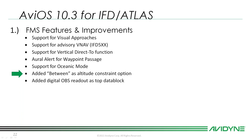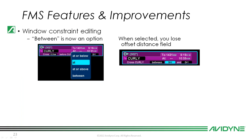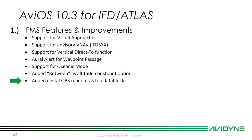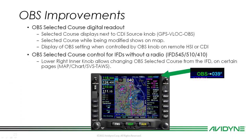We added 'between' as an altitude constraint. In your flight plan when you change altitude constraints — normally at or below, at, or at or above — we've added 'between,' which is a block altitude where you set two altitudes. We also added a digital OBS readout for the top data block: previously when you went into OBS mode you'd just see 'OBS,' but now the selected course displays next to the CDI source.